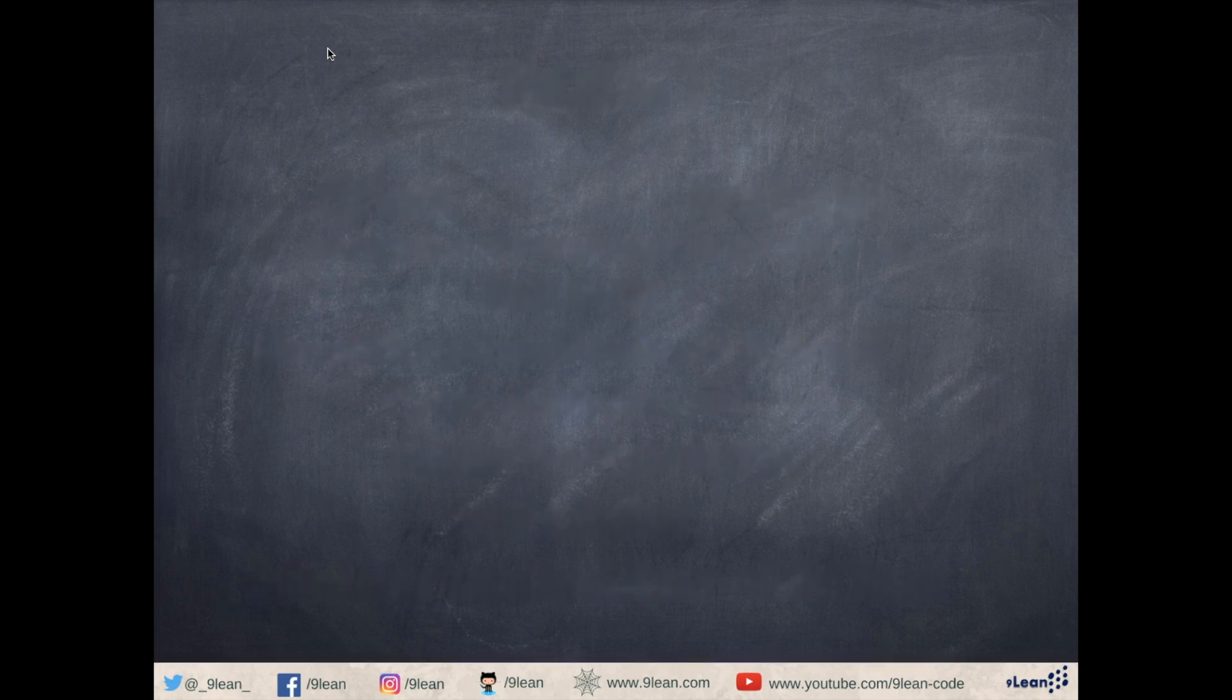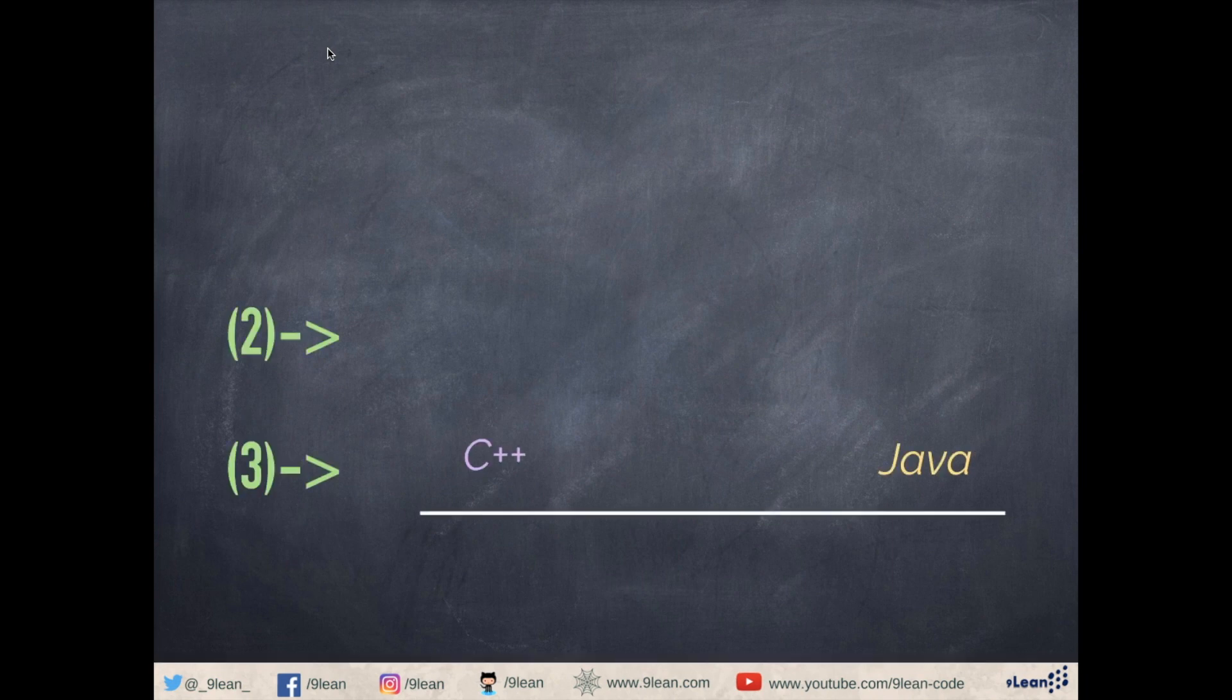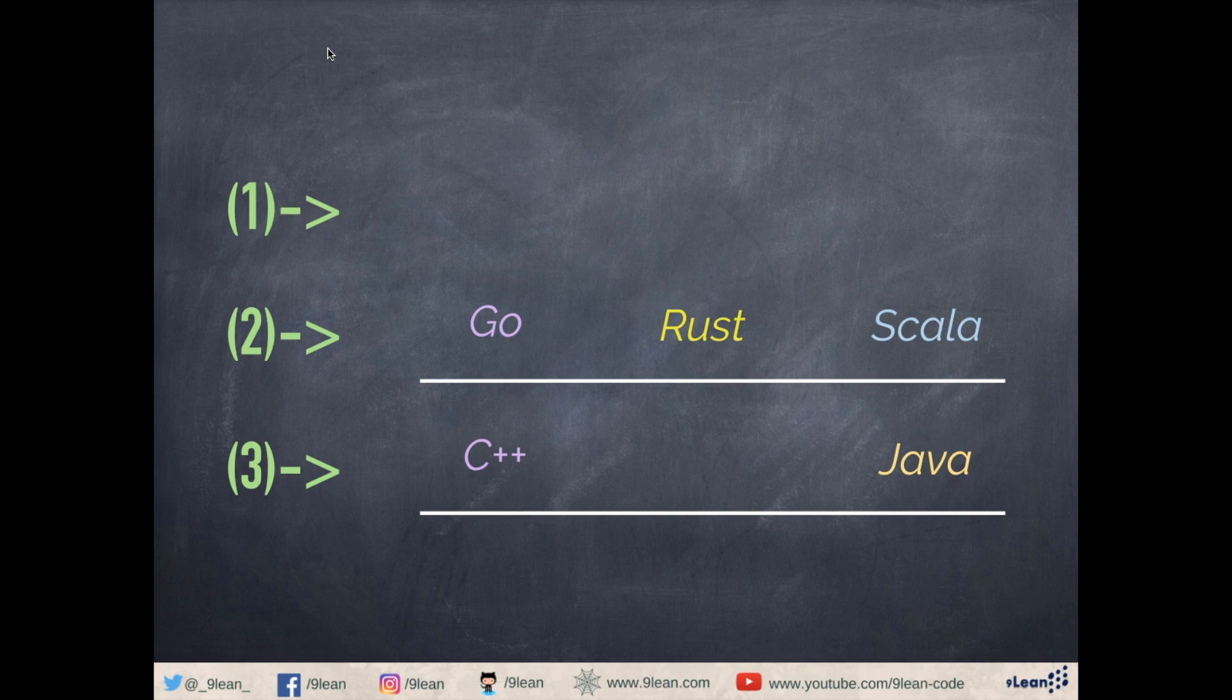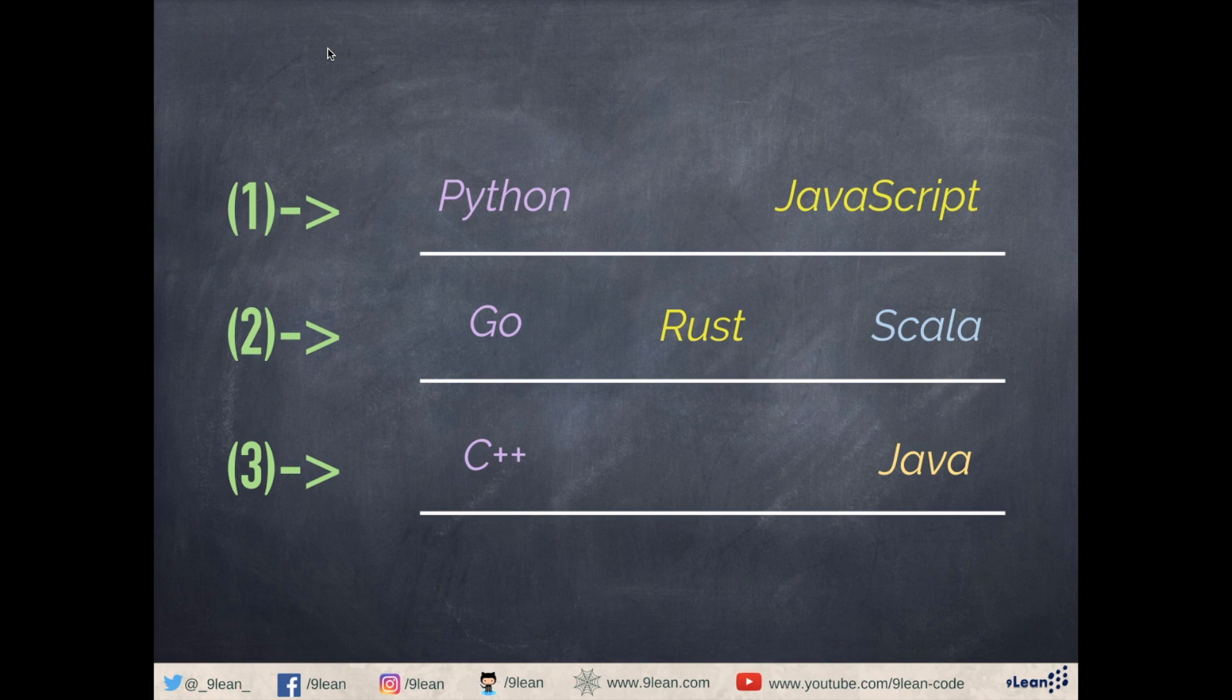So let's do a recap. Number three position is taken by C++ and Java. Number two is for Go, Rust, and Scala, and number one for Python and JavaScript. If you learn these seven languages, you understand each and every aspect of programming and you are also future-ready with these languages.